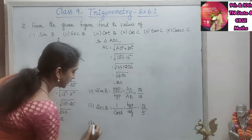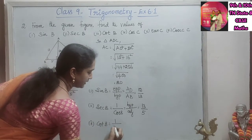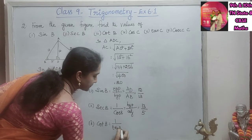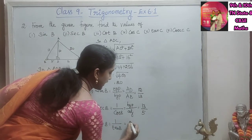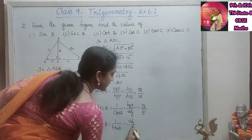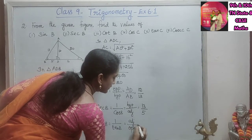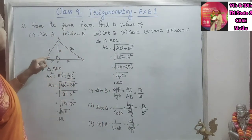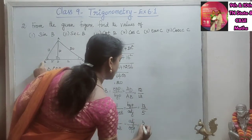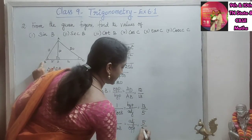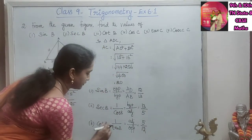Then cot B. Cot B is the reciprocal of tan, that is 1 by tan B. So cot is adjacent by opposite. The adjacent side for B is 5 and the opposite side is 12. So cot B is 5 by 12.